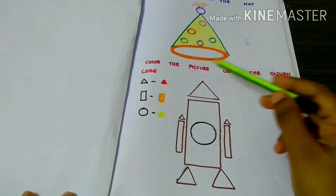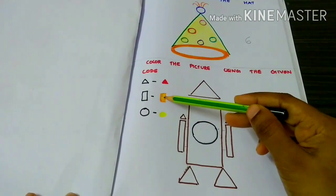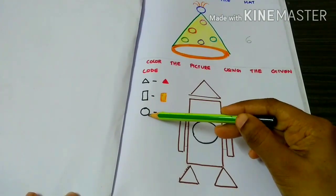Color the picture using the given codes. Triangle red, rectangle orange, circle yellow.